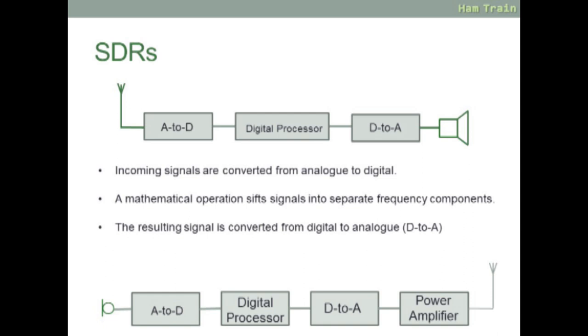Staying with block diagrams, here's a relatively new one relating to SDRs or software-defined radios. The first image shows a receiver on the left: you have the antenna, then the A-to-D analog to digital converter, next the digital processor, and then the digital to analog conversion to the loudspeaker. Incoming signals are converted from analog to digital. A mathematical operation done by a computer processor sifts the signals into separate frequency components. The resulting signal is converted D to A for the loudspeaker. Below that, you'll see the transmitter where your analog voice is converted to digital using A-to-D, the signal is digitally processed, then D-to-A digital to analog, then into the power amplifier and off to the transmitting antenna.